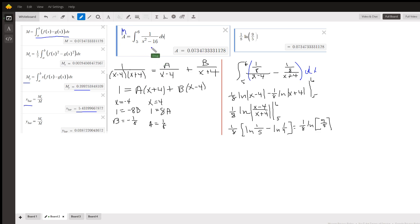So we have to find the antiderivative of this. We have to use partial fraction decomposition. And here's the work we're doing that: b is negative 1/8, a is 1/8.